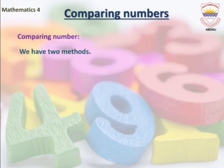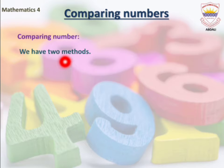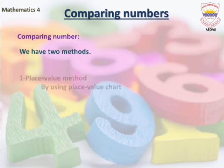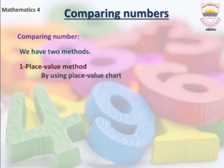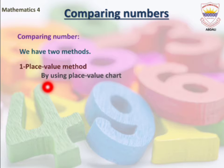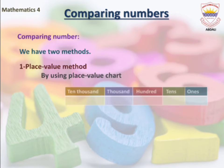We have two methods to compare numbers. Our first method is the place value method, by using a place value chart.